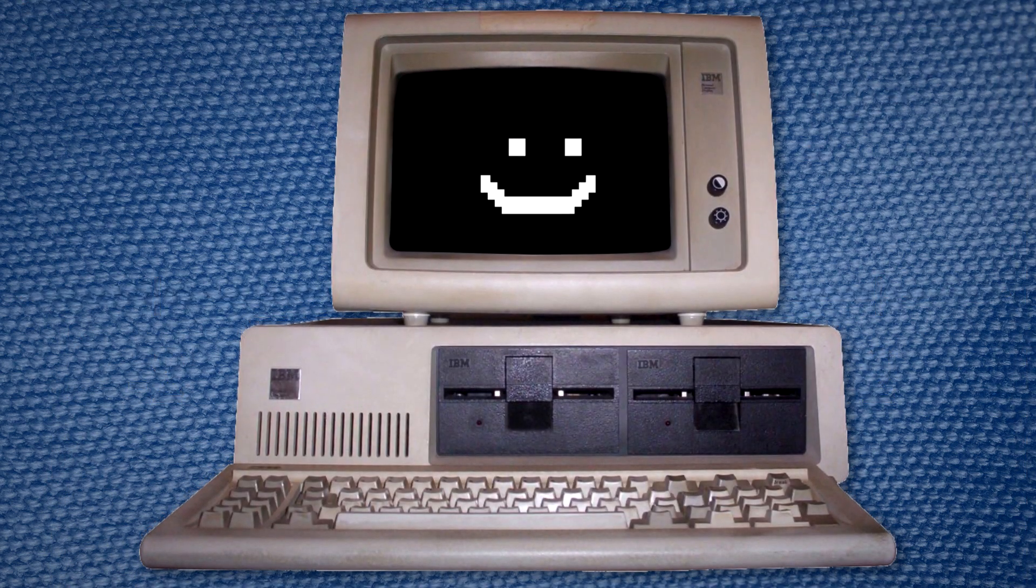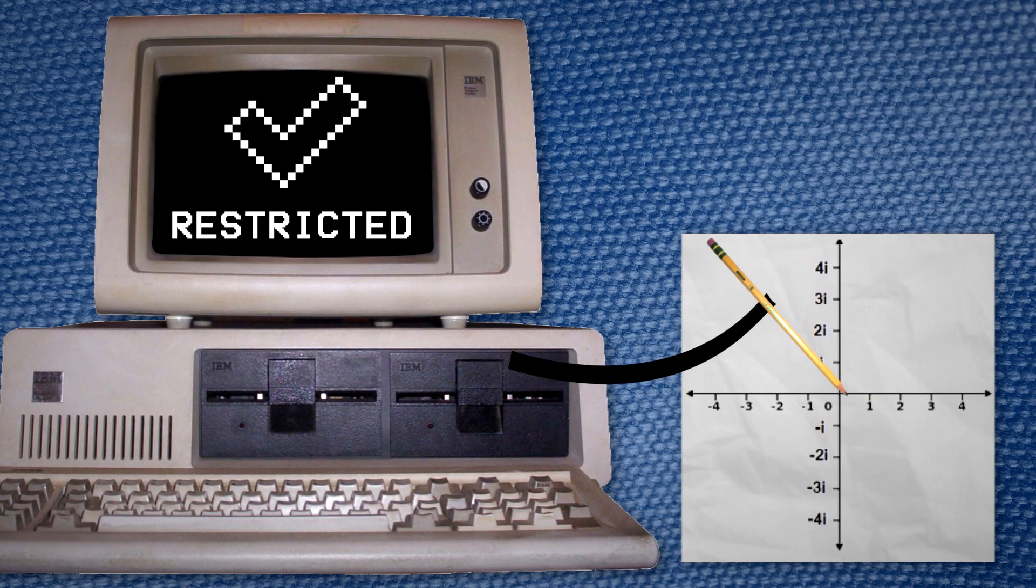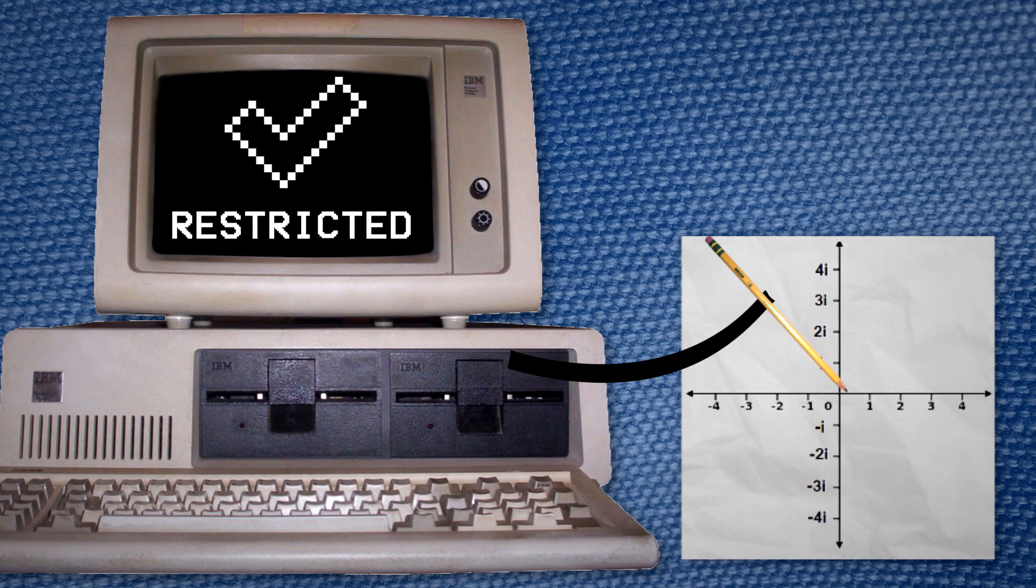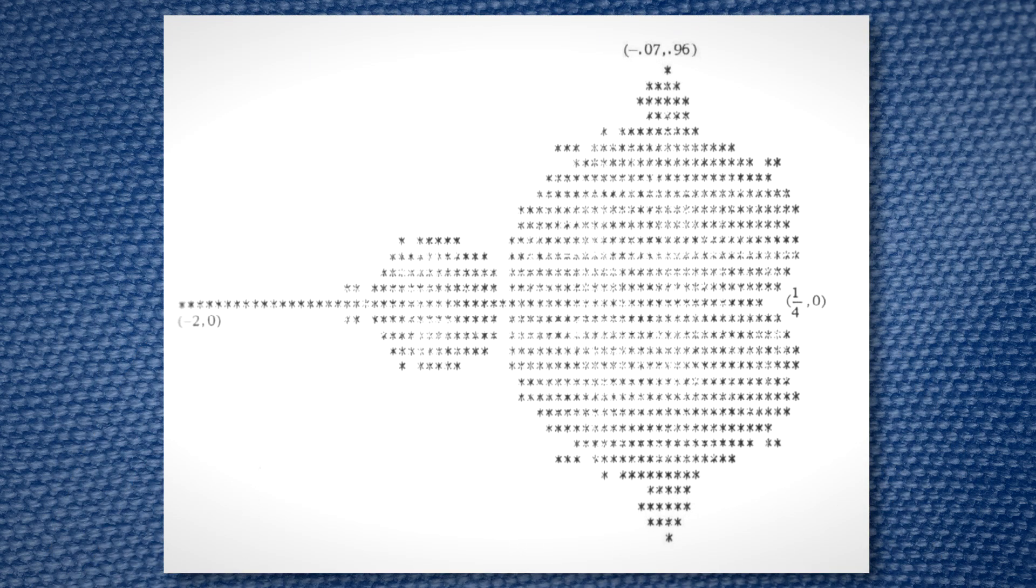Mandelbrot designed a computer program which would print a dot at any number c in this two-dimensional plane where the iteration using that number as c in our formula proved to be, by our definition, restricted. He ran the program multiple times, and every time he was greeted with this odd-looking splotchy shape.